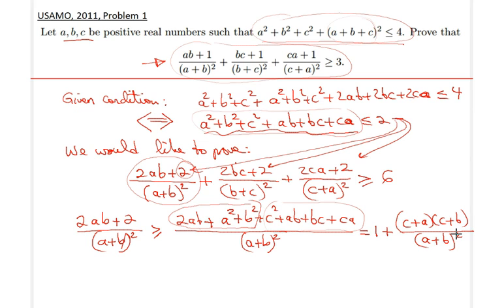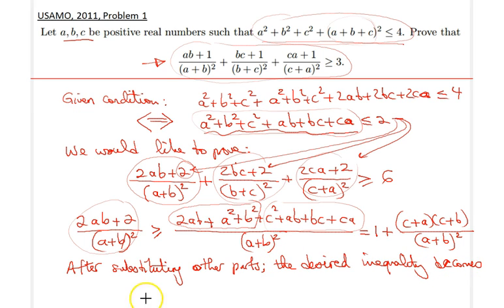So all I will do now is, because my expressions look very symmetric, I can reproduce this result three times and substitute them here in the desired inequality. So therefore, the problem reduces to, after substituting other parts as well, the desired inequality becomes the following.